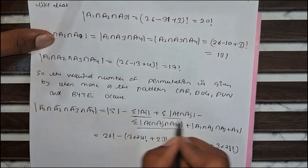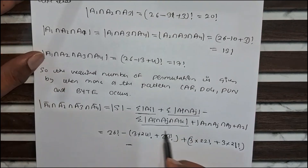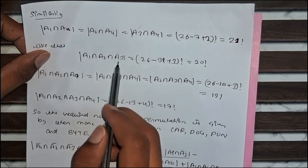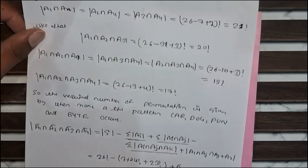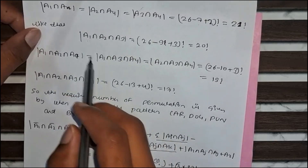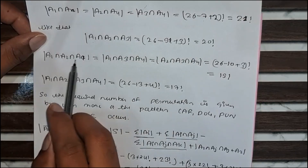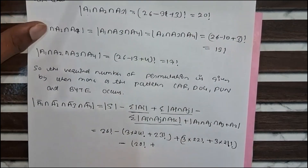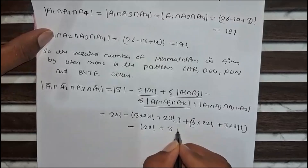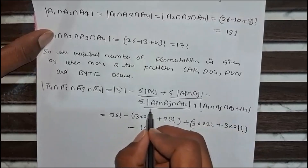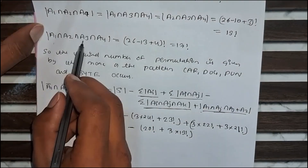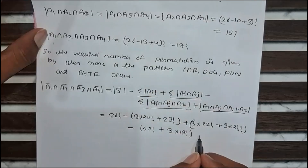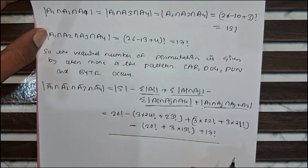For summation of |Ai ∩ Aj ∩ Ak|: the case A1 ∩ A2 ∩ A3 gives 20 factorial. The three cases involving A4 (A1 ∩ A2 ∩ A4, A1 ∩ A3 ∩ A4, A2 ∩ A3 ∩ A4) each give 19 factorial, so 3 × 19 factorial. Finally, A1 ∩ A2 ∩ A3 ∩ A4 gives 17 factorial. You can further simplify this or leave it as is.